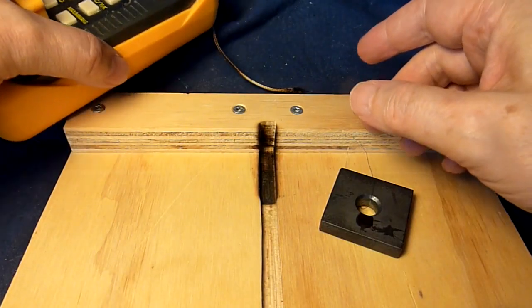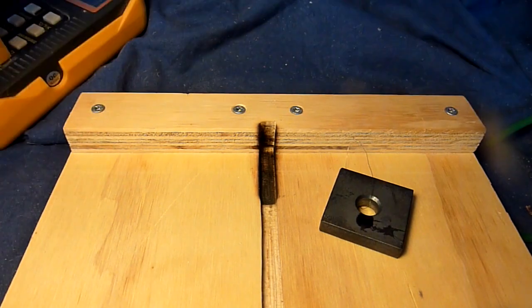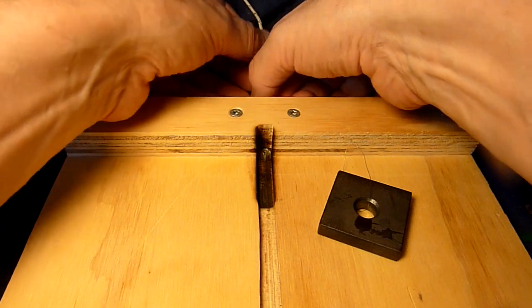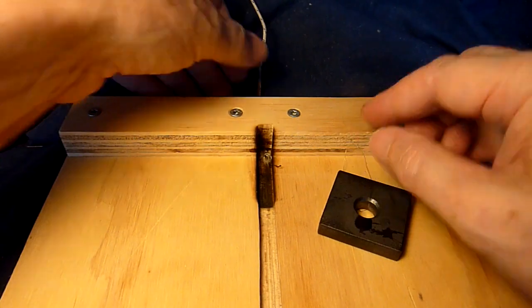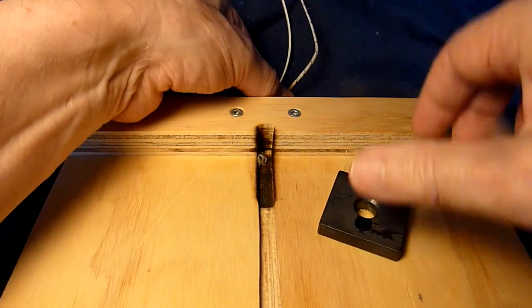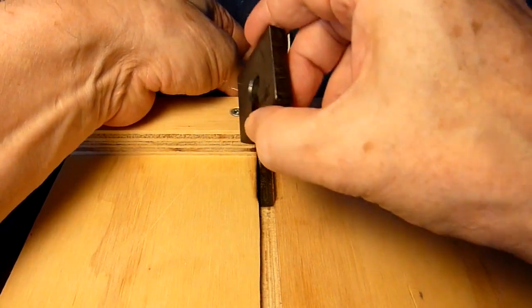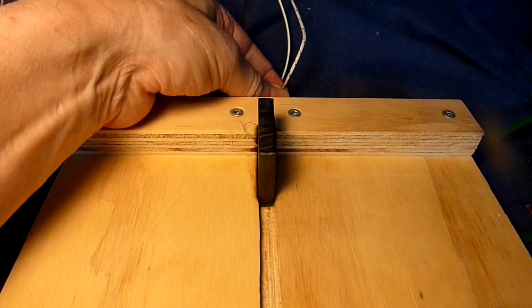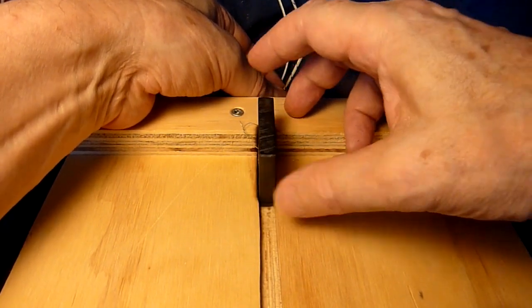What I then do is that I stick this thermocouple in this hole and then it comes up here. It's bent a little. When I put this piece on here it will measure the temperature of this steel block.